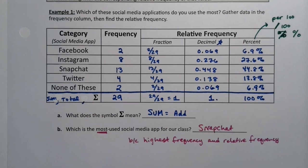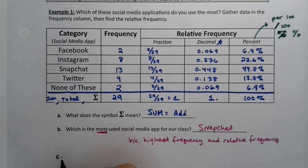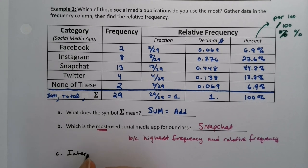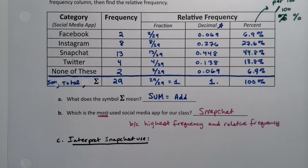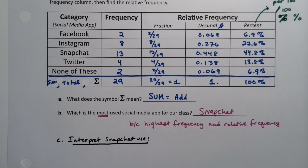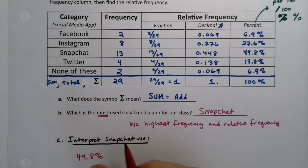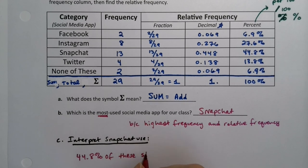Let me just show you what I mean really quickly. So interpret that value. If I want to interpret Snapchat's value or Snapchat use, that's where I would use the percentage. So I would say 44.8 percent of the Math 133 students, or of these students, had Snapchat as their favorite.